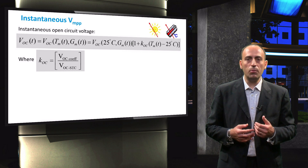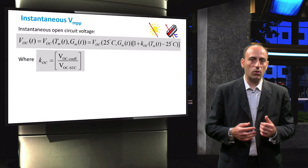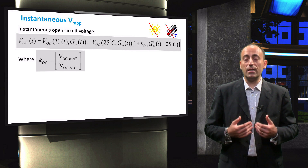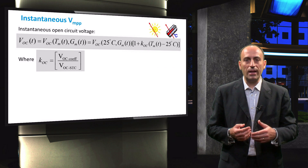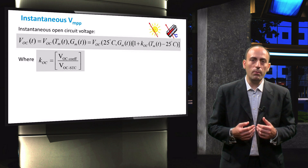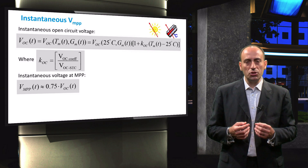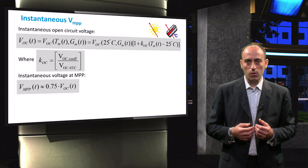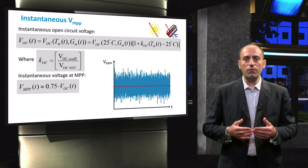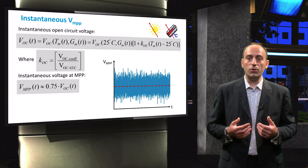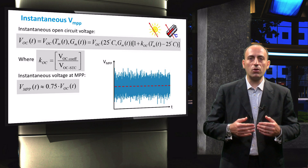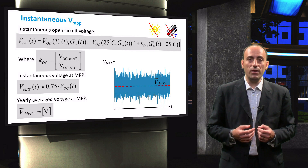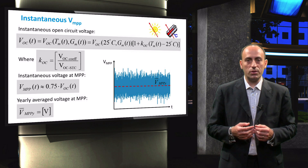One method is to use a simple maximum power point technique, such as the constant voltage method, which offsets the open-circuit voltage by a fractional value. The other method is an advanced technique where an MPPT algorithm is coded and simulated separately. In this video, we will use the first method for simplicity's sake. As such, we calculate the instantaneous VMP by multiplying the instantaneous VOC by a factor of 0.75. The figure on the right shows the variation of the calculated VMP over time. Note that the peaks and valleys seen here are caused by fluctuations in irradiance and temperature in the PV module. From the instantaneous VMP, we can determine an average over the chosen time period.